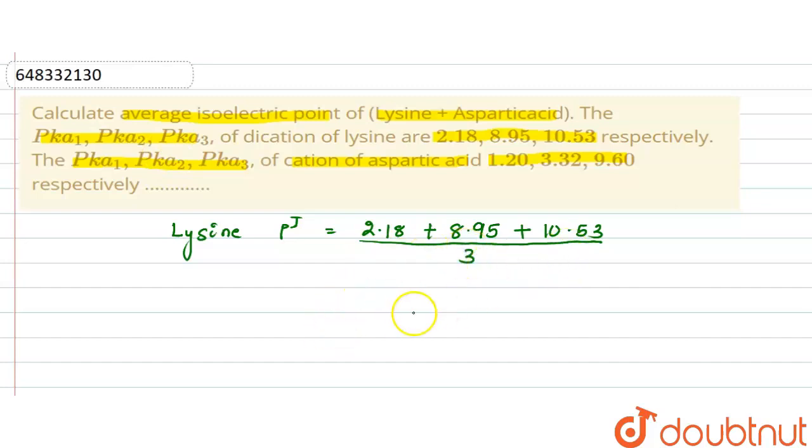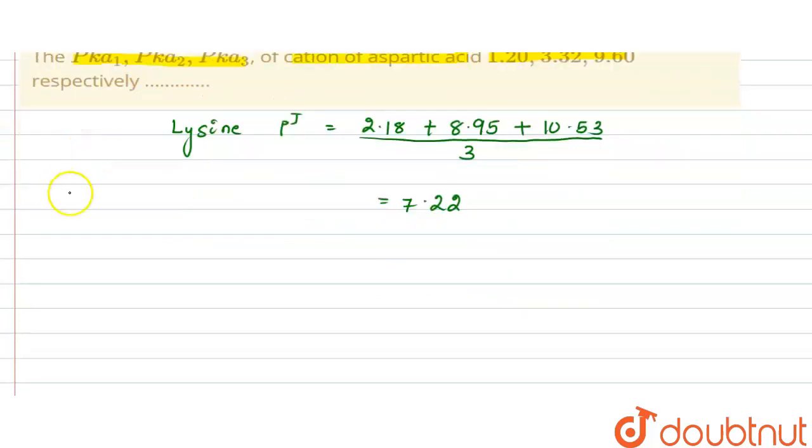Okay, so second is aspartic acid. Aspartic acid pI, that is 1.20 plus 3.32 plus 9.60.